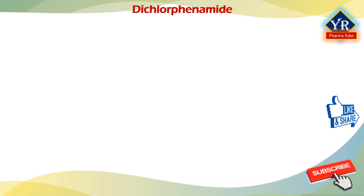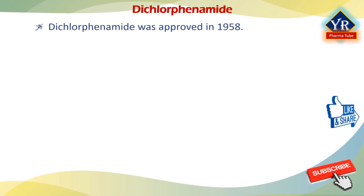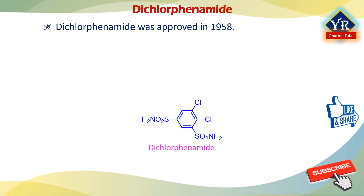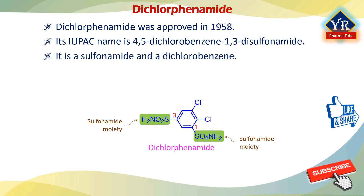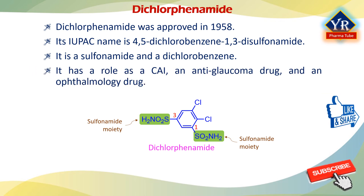The last drug of this lesson is dichlorphenamide. Dichlorphenamide was approved in the US in 1958. Its IUPAC name is 4,5-dichlorobenzene-1,3-disulfonamide. It is a benzene-1,3-disulfonamide in which the hydrogens at positions 4 and 5 are substituted by chlorine. Dichlorphenamide is chemically a sulfonamide and a dichlorobenzene. It has a role as a carbonic anhydrase inhibitor, an anti-glaucoma drug, and an ophthalmology drug.